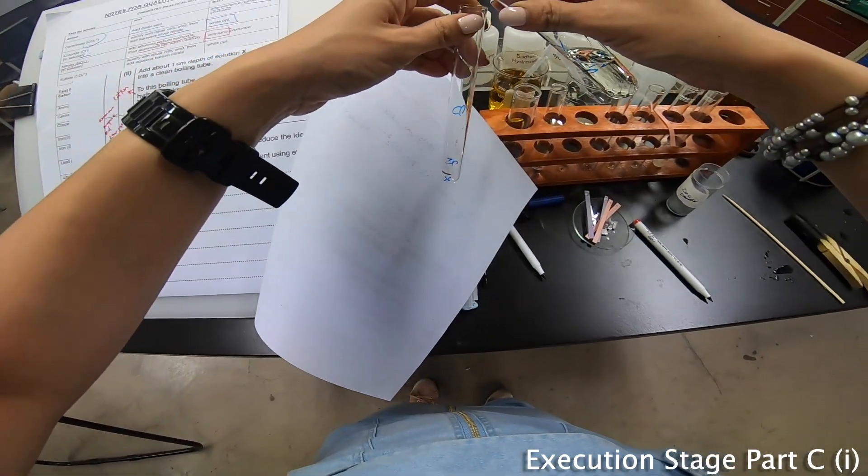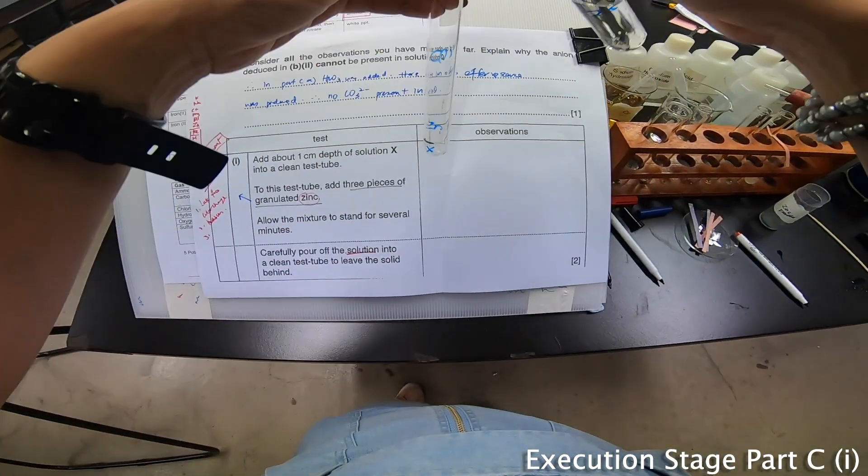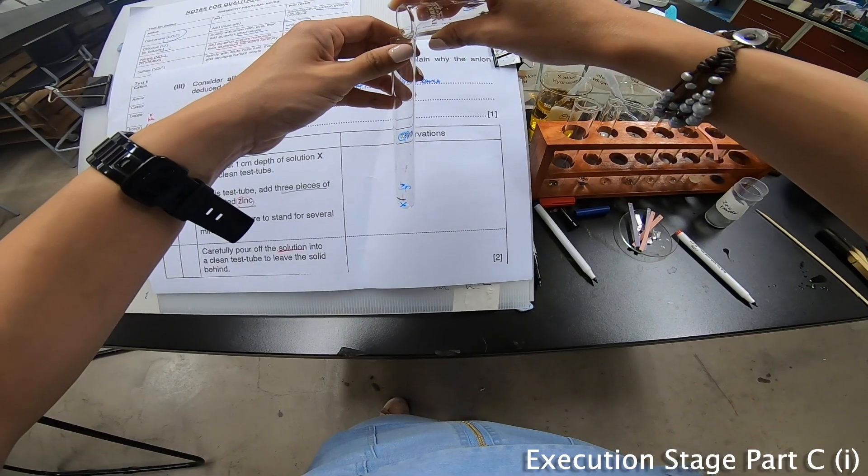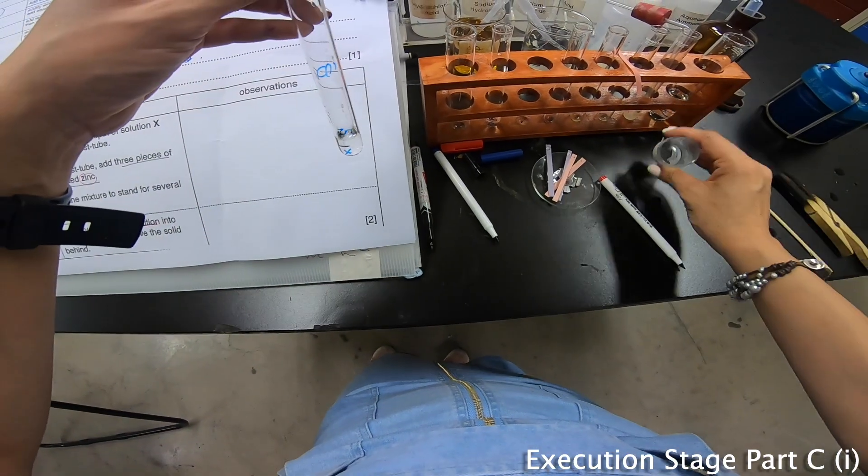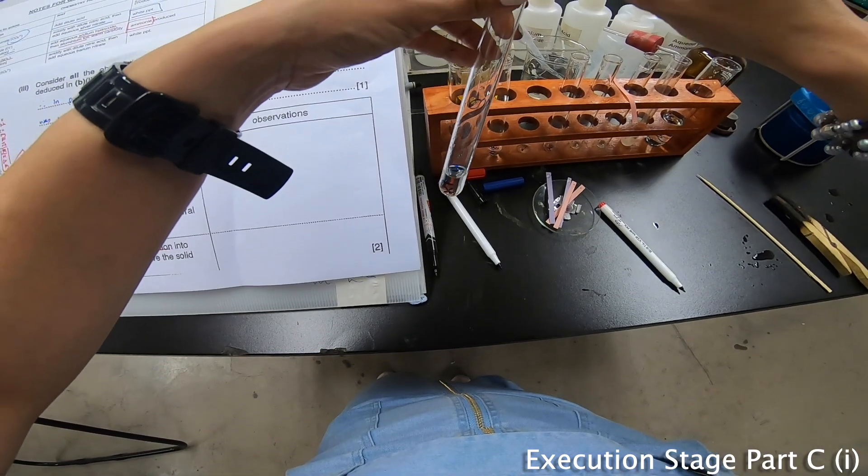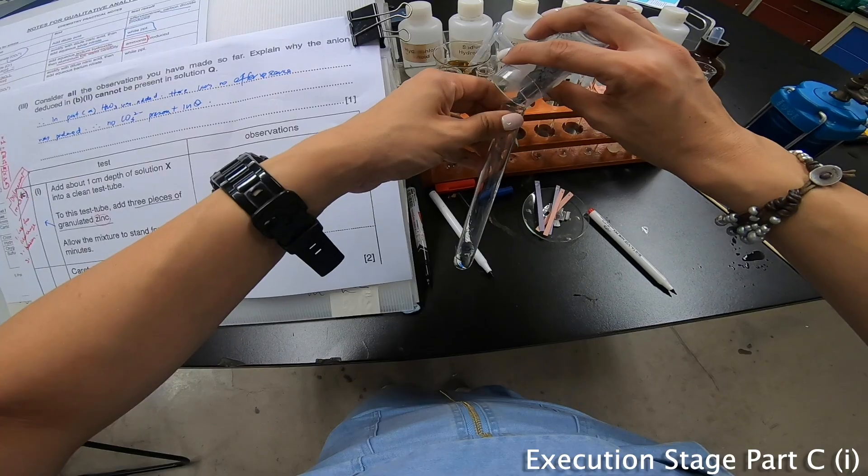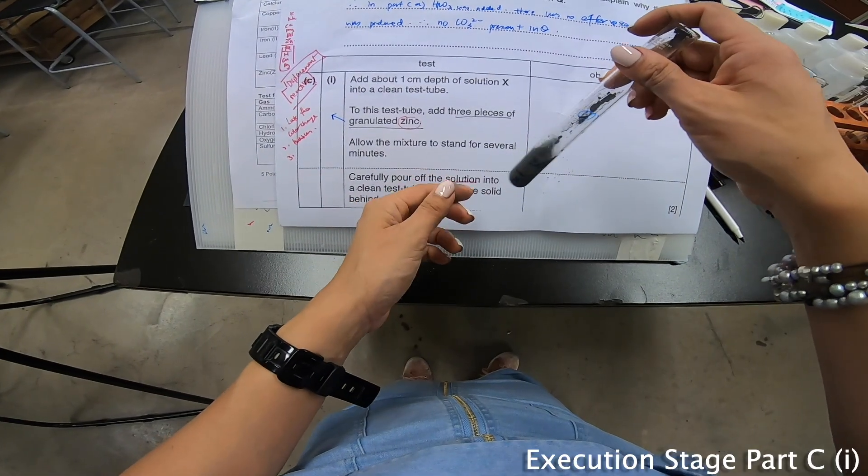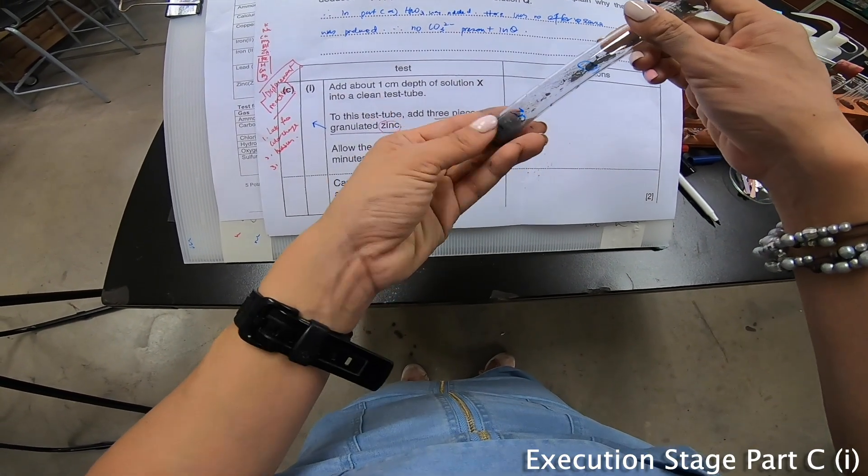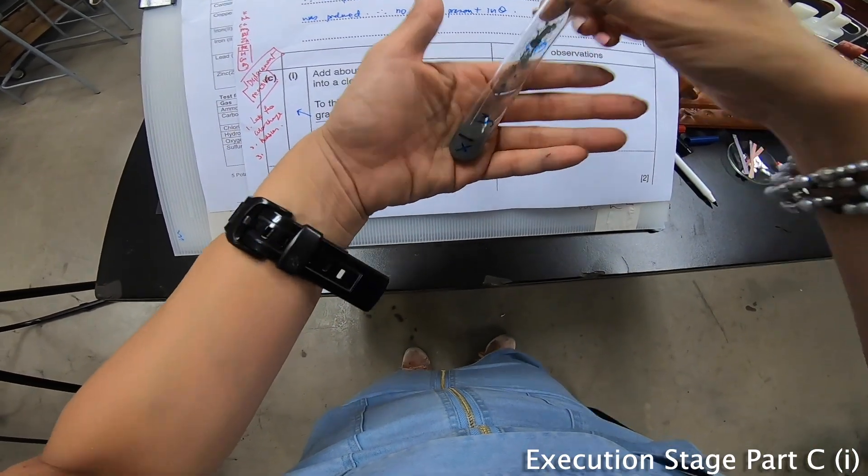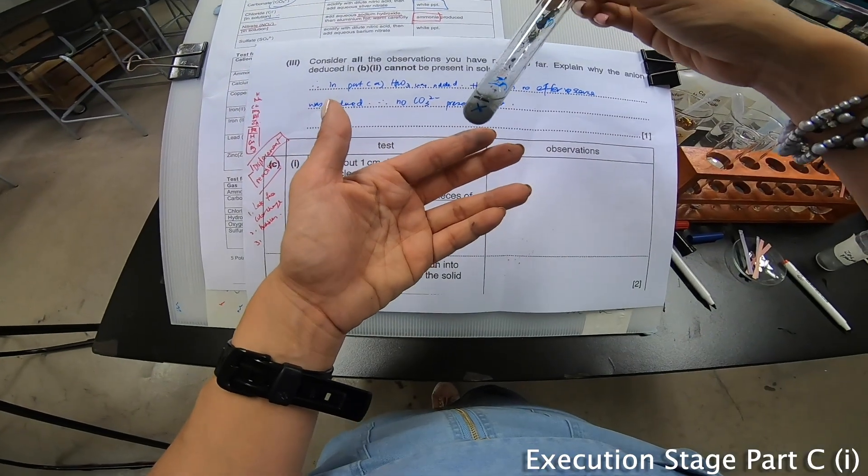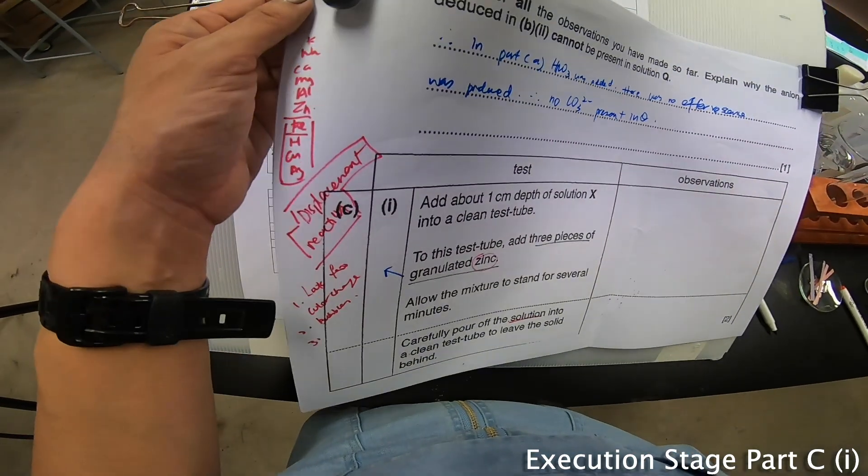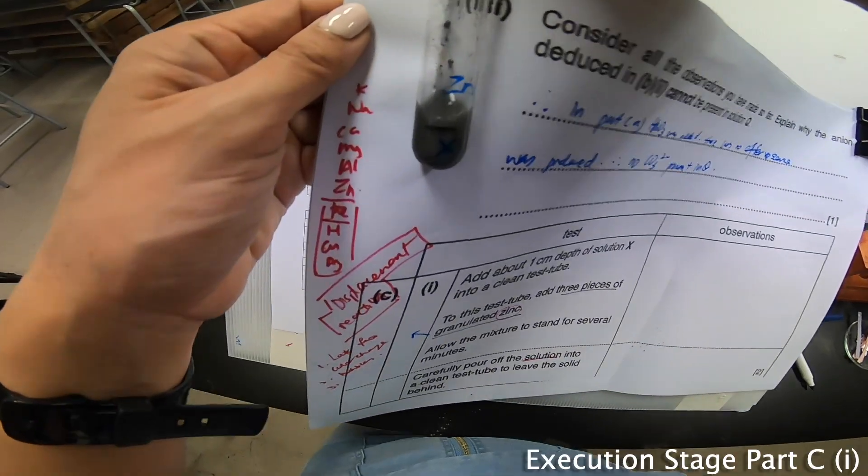This is my X, so I'm going to pour out X. Pour a little bit of the zinc inside - zinc powder. Allow the mixture to stand for several minutes. At the moment, I feel that the texture itself is hot, and not only that, I can actually see bubbles forming. I'm going to use the white backing. I hope you can see - I see slight bubbles forming.